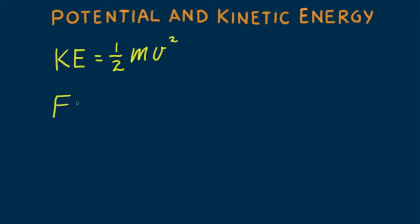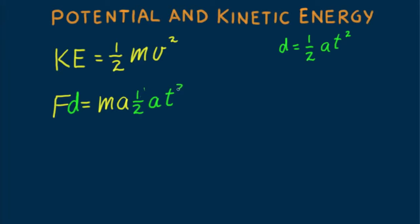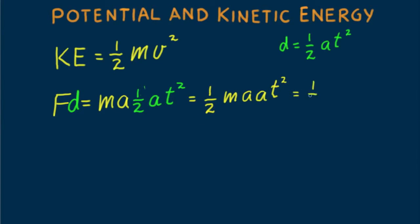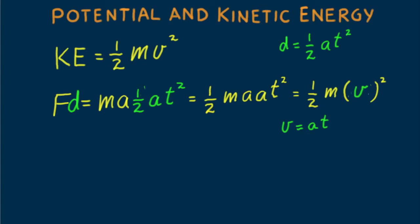Begin with Newton's second law: F equals ma. Multiply both sides by distance d. Recall that distance moved from rest with constant acceleration is d equals one half a t squared. Substituting for d, we get F times d equals one half m times a t squared. Now recall that v equals at, so at squared equals v squared. Then fd equals one half mv squared.